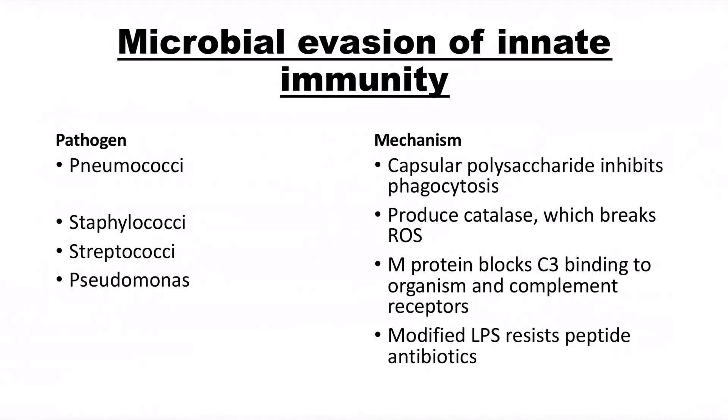Microbial evasion of innate immunity: pathogens like pneumococci, staphylococci, streptococci, and Pseudomonas have found ways to evade innate immunity. Pneumococci has capsular polysaccharide that inhibits phagocytosis by macrophages. Staphylococci has catalase enzyme that breaks down reactive oxygen species (ROS) into water and oxygen, which is not harmful to bacteria. Streptococci has M protein that blocks C3 binding to the organism and complement receptor. Pseudomonas has modified LPS that resists peptide antibiotics.